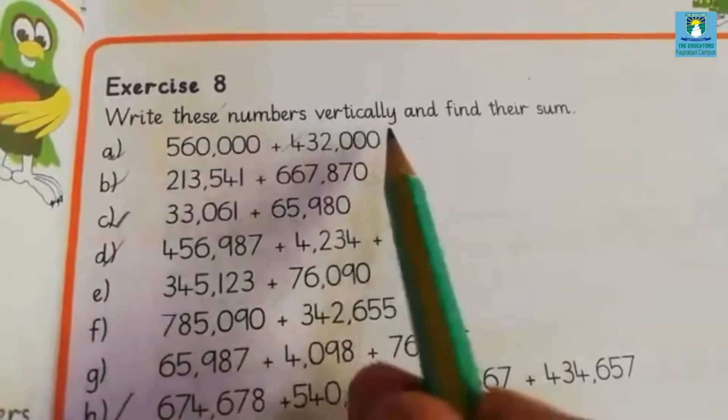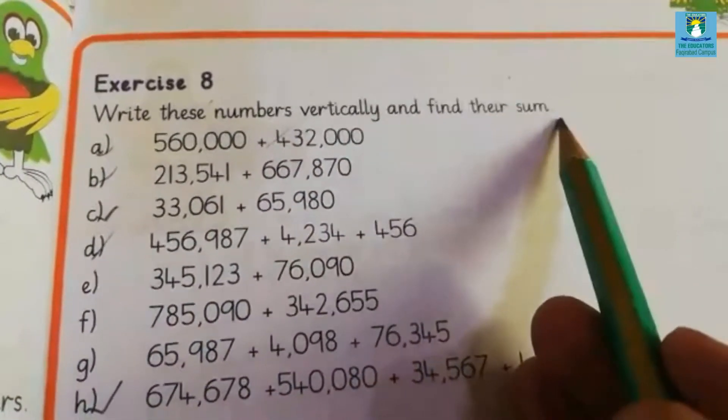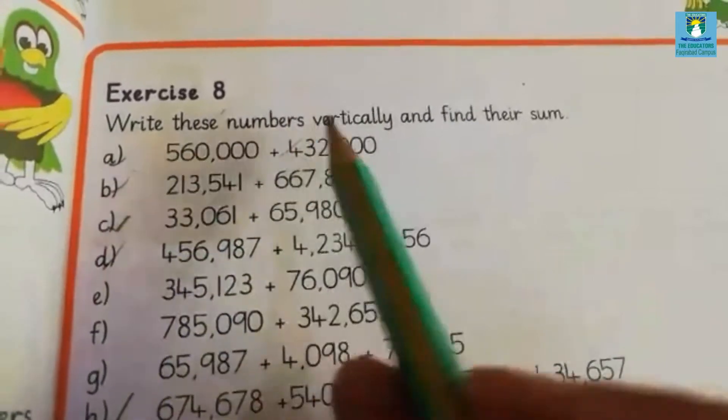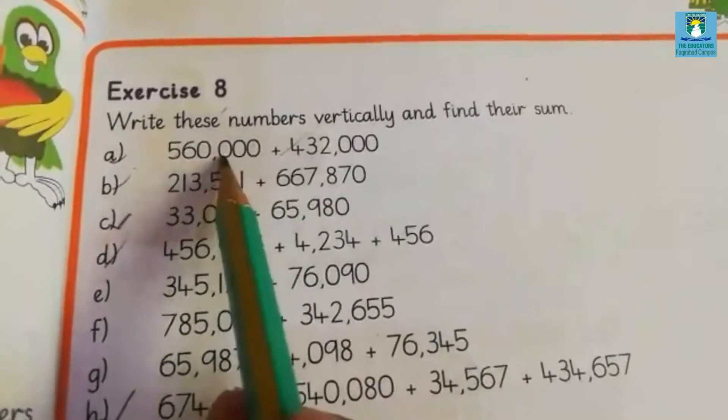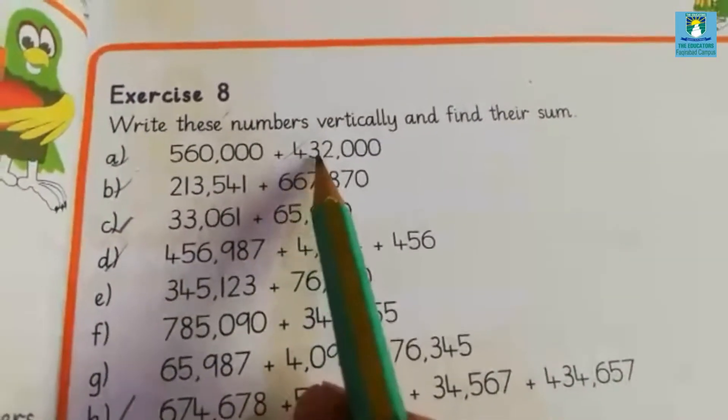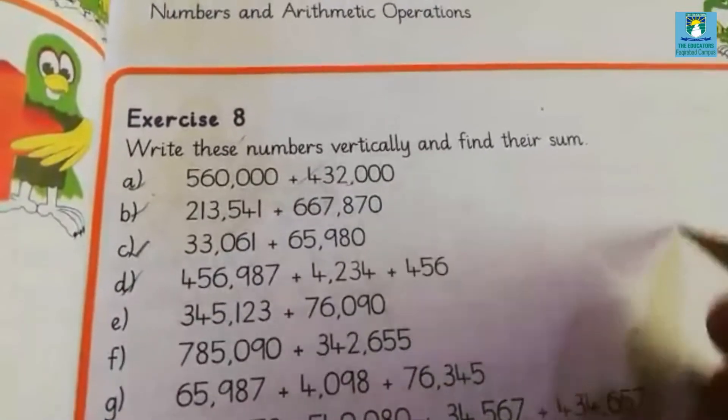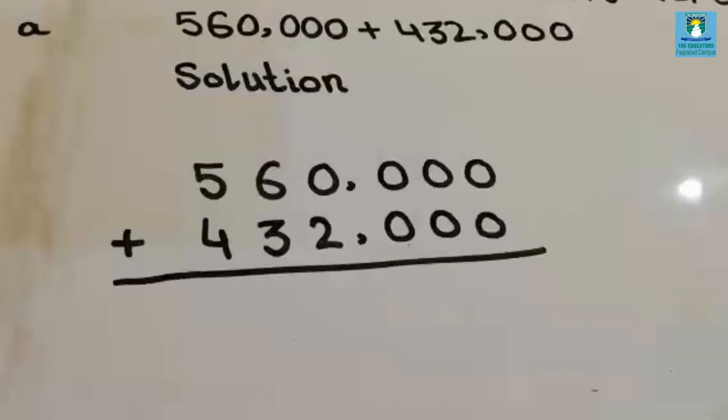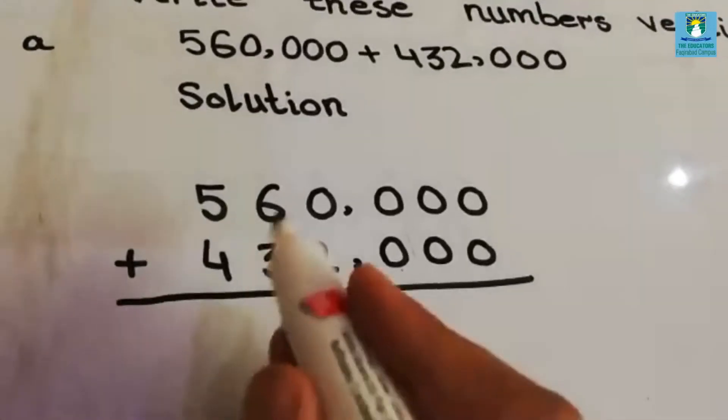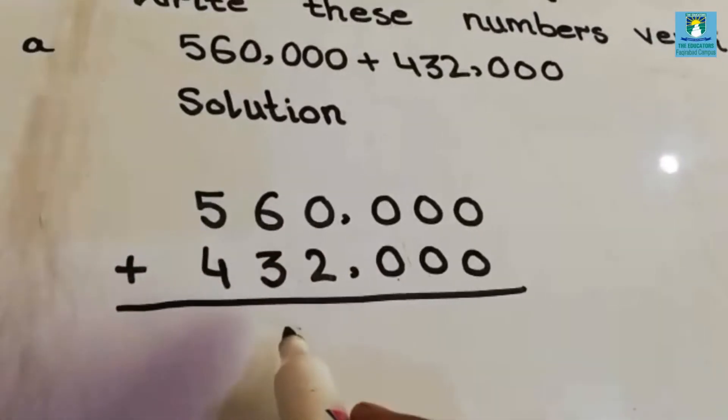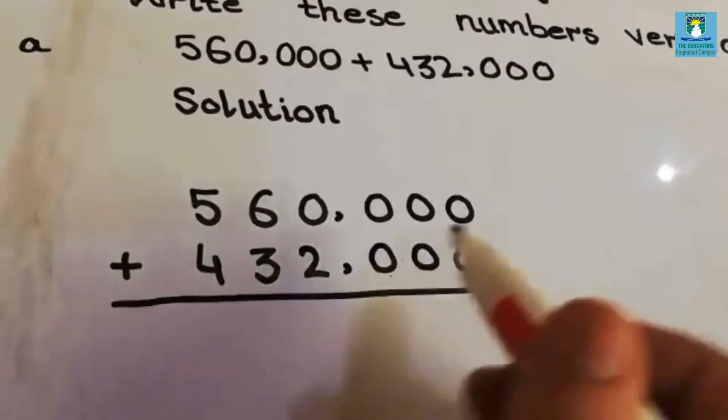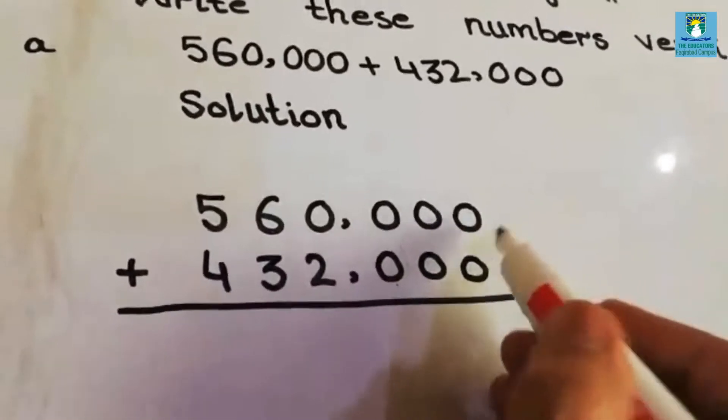Write these numbers vertically and find their sum. Part A: 560,000 plus 432,000. We have to write these numbers vertically like this, then we have to find out their sum.